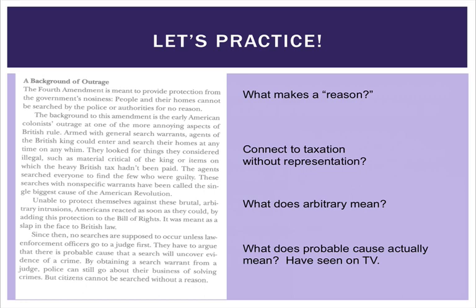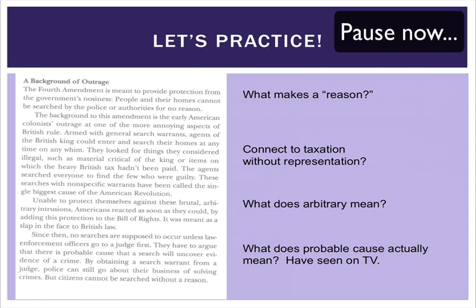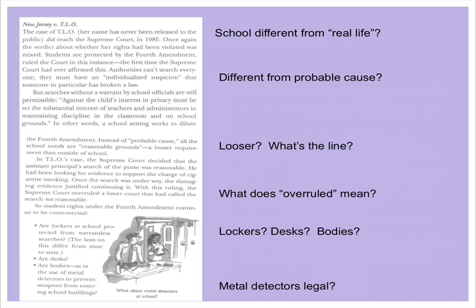Let's go ahead and practice. Pretend you've been given a government text on the Fourth Amendment — nonfiction, assigned for the next day. Go ahead and pause the podcast, read over the text, and take a look at the questions asked along the right-hand side. As you're going, you would stop your reading and write questions down in your margin. These may be incomplete sentences since they're just annotations for you as the reader. You can see that level one, two, and three questions have been asked along the way. There's also an example from a case study of New Jersey v. TLO, a Supreme Court case from 1985.